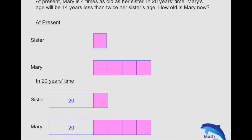How do we solve the question? The answer lies in this particular area. Mary's age will be 14 years less than twice her sister's age.